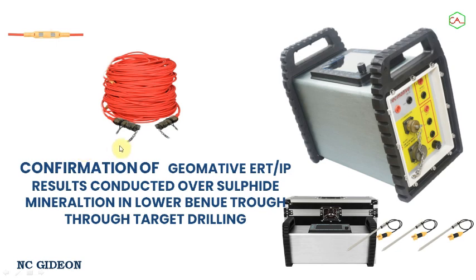We want to look at some of the results we've gotten from GEMATIVE ART IP 16. GEMATIVE has proved to be very efficient in delineation of some sulfide mineralization within the lower Benue Trough. We've used this equipment to detect some sulfide mineralizations, and this is actually also confirmed through some of the target drillings we are trying to use. This equipment, which we've used for over a year now, has continued to prove good results.